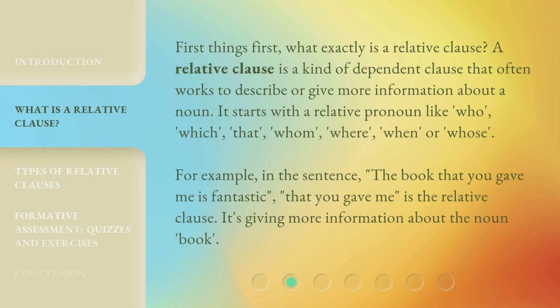First things first, what exactly is a relative clause? A relative clause is a kind of dependent clause that often works to describe or give more information about a noun. It starts with a relative pronoun like: who, which, that, whom, where, when, or whose. For example, in the sentence 'the book that you gave me is fantastic,' 'that you gave me' is the relative clause. It's giving more information about the noun 'book.'